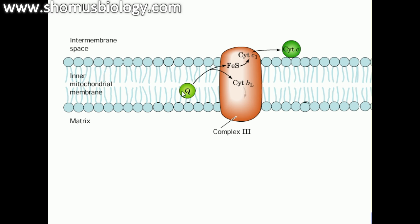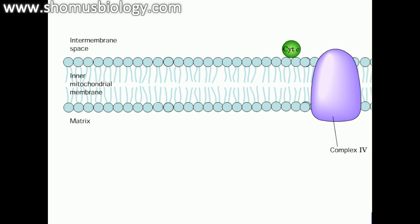Complex 3 accepts electrons from reduced coenzyme Q and transports them to cytochrome c. It contains 11 protein subunits, three cytochrome regions, and one iron-sulfur center. It translocates four protons per two electrons transferred to cytochrome c. Since each cytochrome c accepts only one electron, two cytochrome c molecules are needed per transfer. Complex 4, cytochrome c oxidase, accepts electrons from reduced cytochrome c and transfers them to molecular oxygen.